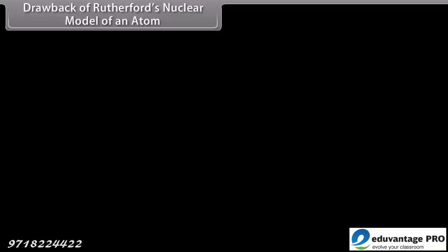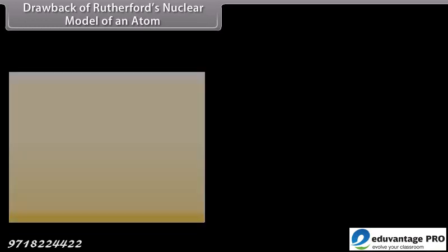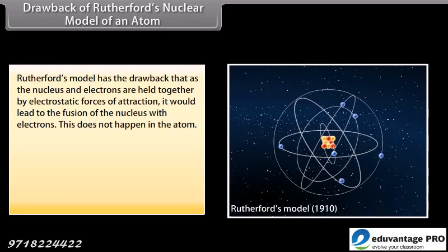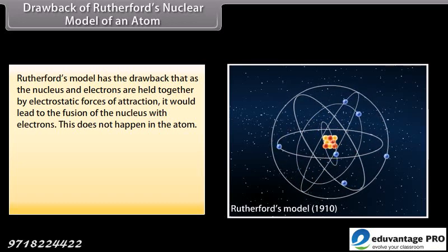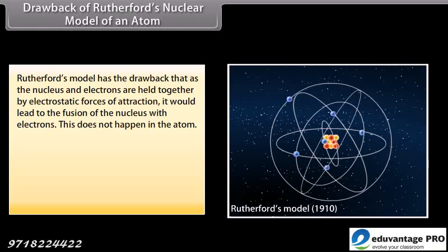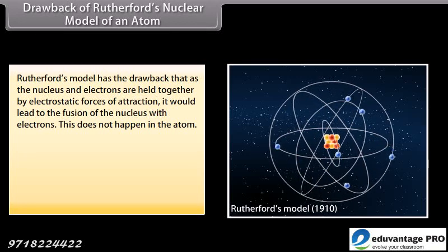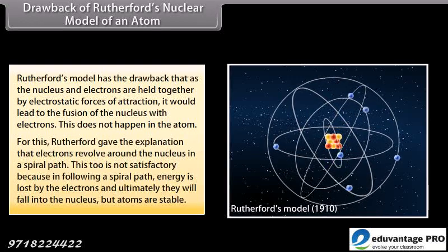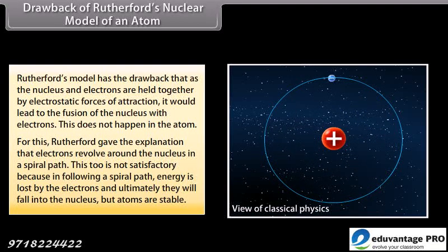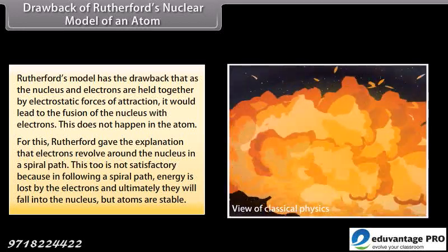Drawback of Rutherford's Nuclear Model of an Atom. Rutherford's model has the drawback that as the nucleus and electrons are held together by electrostatic forces of attraction, it would lead to the fusion of the nucleus with electrons. This does not happen in the atom. For this, Rutherford gave the explanation that electrons revolve around the nucleus in a spiral path. This too is not satisfactory because in following a spiral path, energy is lost by the electrons and ultimately they will fall into the nucleus but atoms are stable.